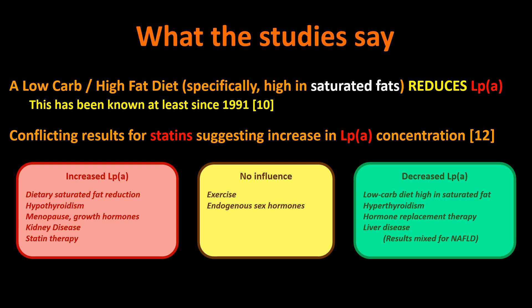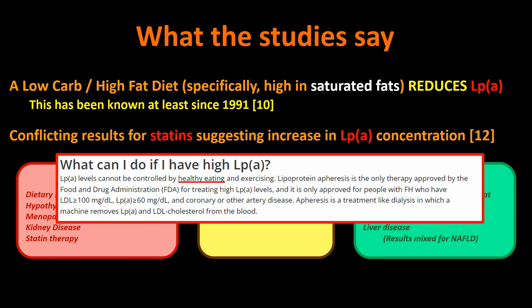Things you might normally expect to impact a lipid — exercise or endogenous sex hormones — didn't seem to have any influence on LP little a. Things that decrease LP little a include: a low-carb diet high in saturated fat, overactive thyroid, hormone replacement therapy, and certain liver disease. Results were mixed for non-alcoholic fatty liver disease. You can see exactly what you'd expect: reduce saturated fat and LP little a goes one way; increase it and LP little a goes the other way. Adding saturated fats actually makes LP little a better.